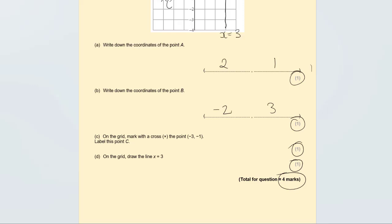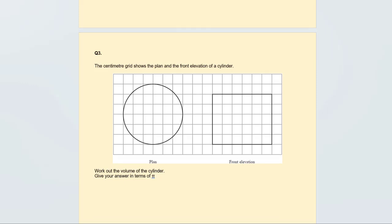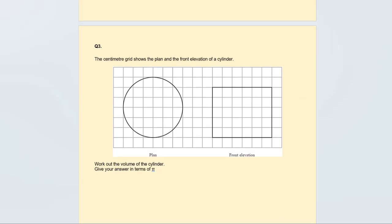If you write the coordinates the wrong way around, you will lose the mark, so always write them correctly. These are only worth one mark each. Next: on the centimetre grid, show the plan and the front elevation of a cylinder, and work out the volume of the cylinder, giving your answer in terms of pi.